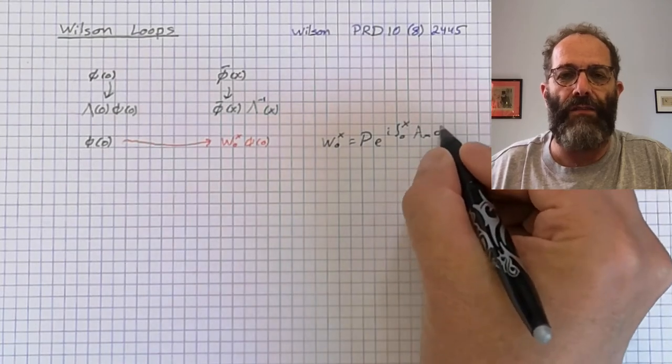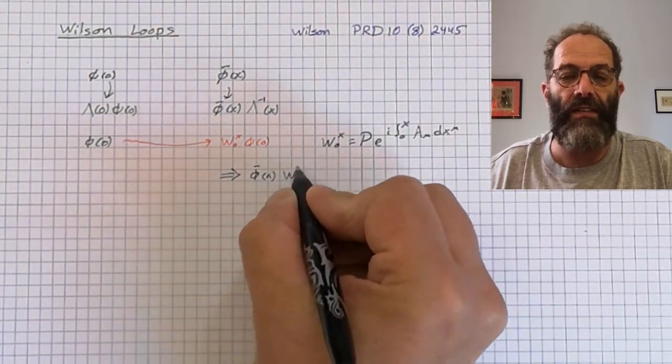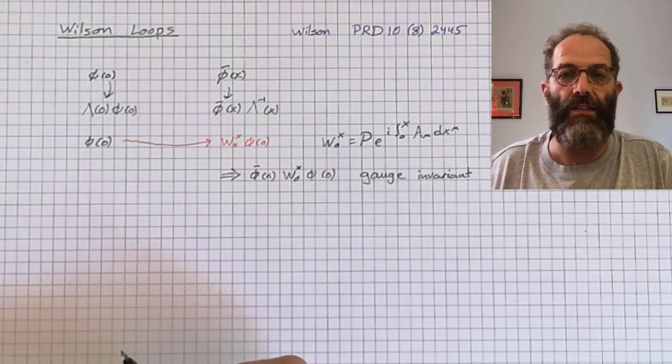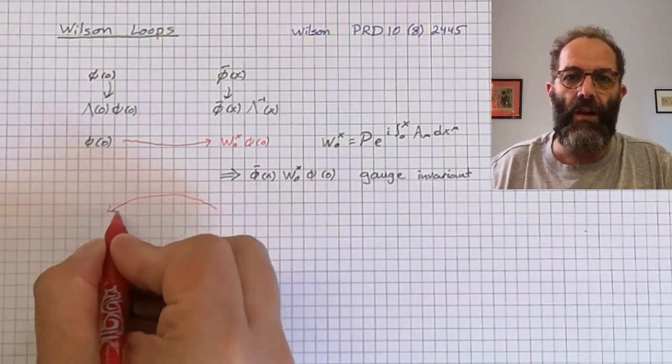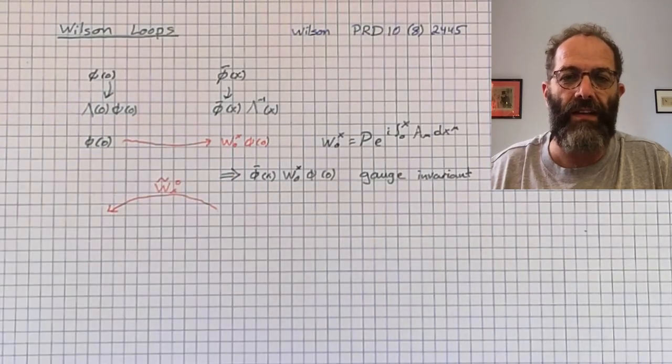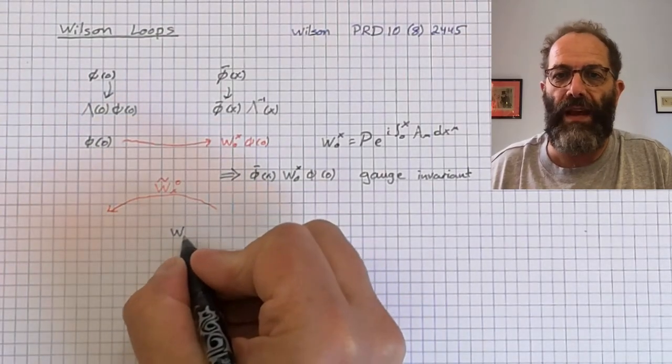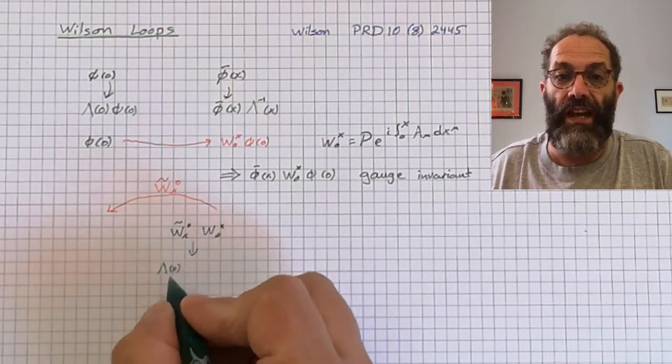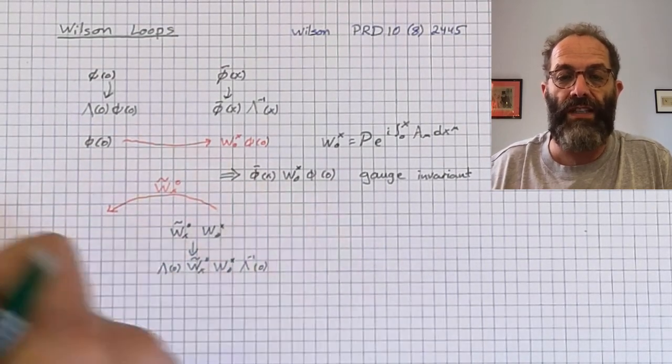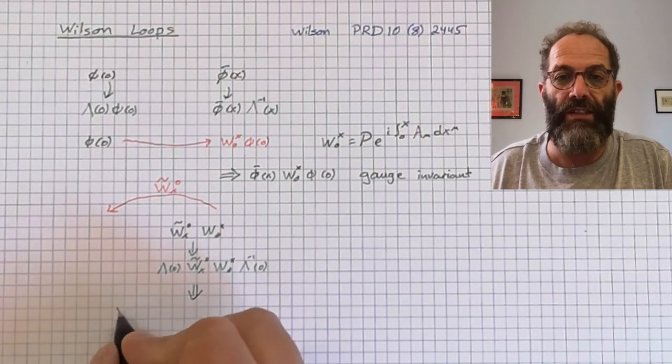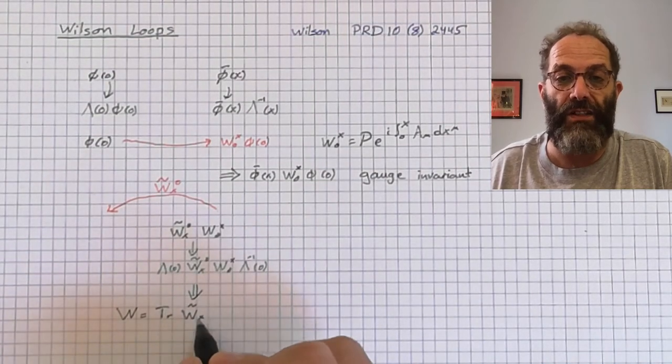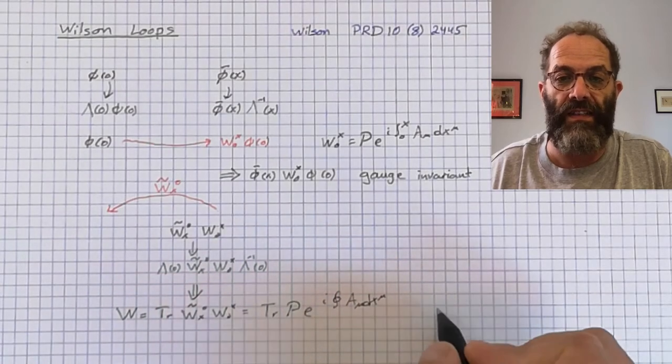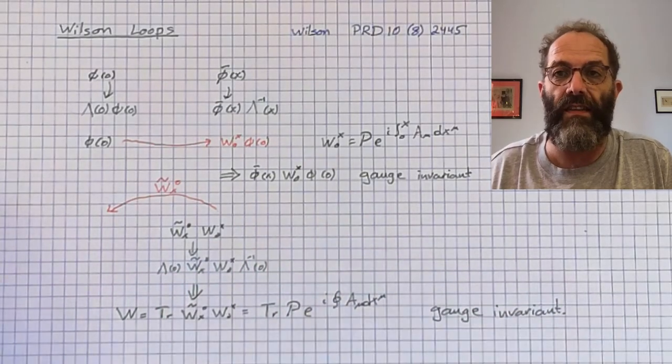Now that you have phi parallel transported to x, you can form the composite with phi bar, W, and phi. And this composite is gauge invariant. You can also parallel transport back with W tilde along a different path. Then the product of these two parallel transports from 0 to x and back from x to 0 transforms under gauge transformations as the adjoint at the origin. So then you can take the trace of it, and the trace is gauge invariant. This is the Wilson loop.